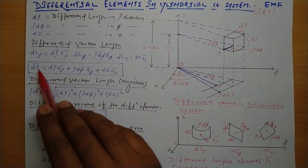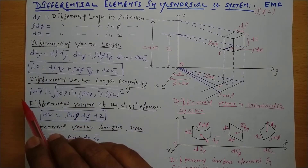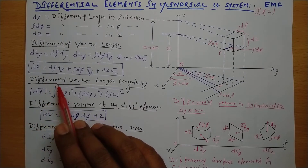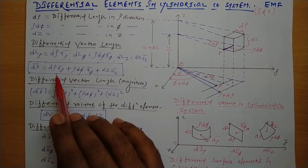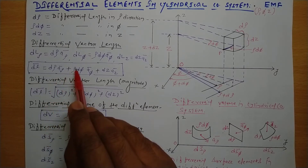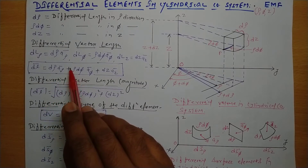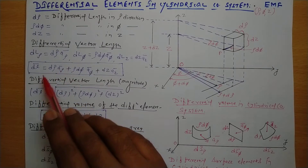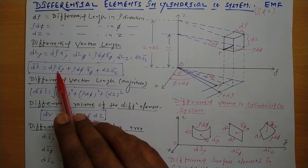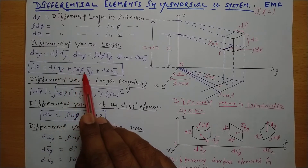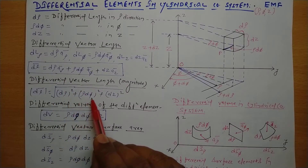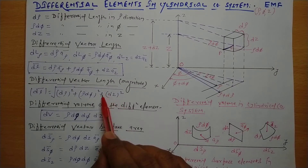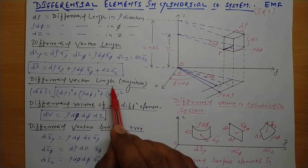The total differential vector length covers all respective axes. If we need to find the magnitude of the differential vector length, we take the mod of this total differential vector length. We take the magnitude of each component, giving us the square root of d rho squared plus rho d phi squared plus dz squared.